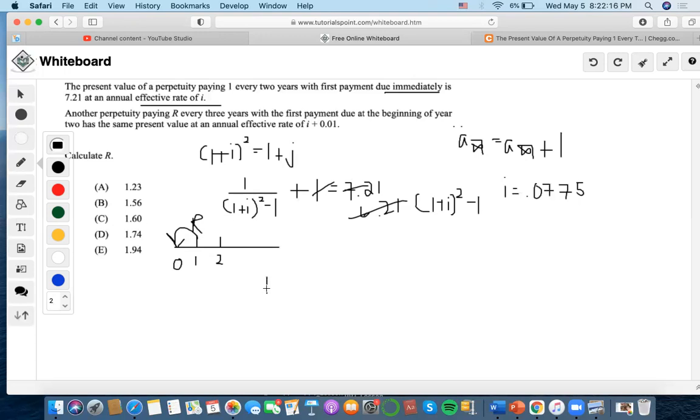Paying r every three years at an annual effective rate. We convert it to a three-year effective rate: (1+i)³ minus 1. We already found i, so we add 0.01 and get 0.0875.